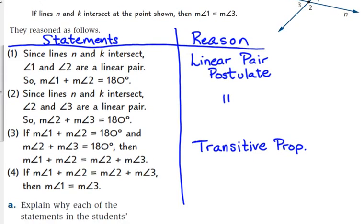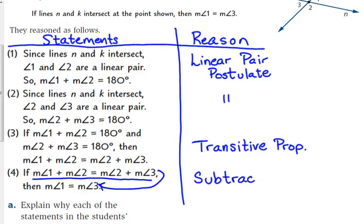If the measure of angle 1 plus the measure of angle 2 equals the measure of angle 2 plus the measure of angle 3, what allows us to say that the measure of angle 1 equals the measure of angle 3? We subtracted the measure of angle 2 from both sides, so it disappeared. That's the subtraction property.